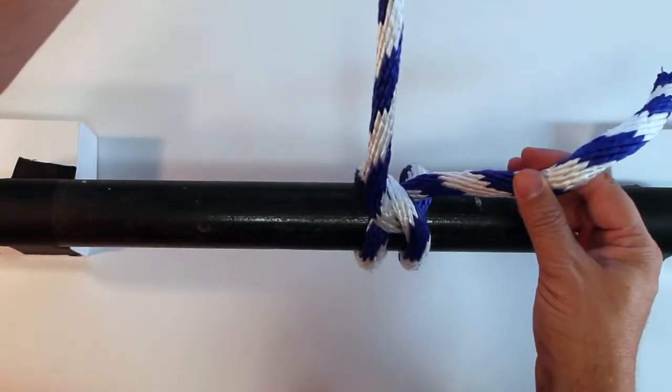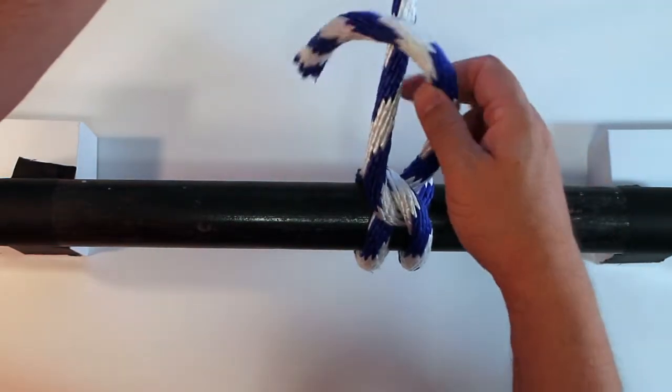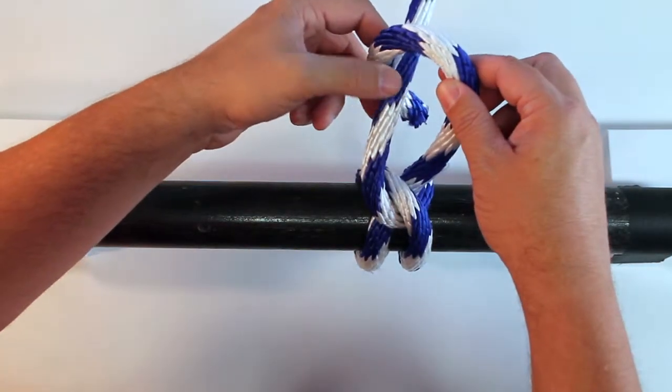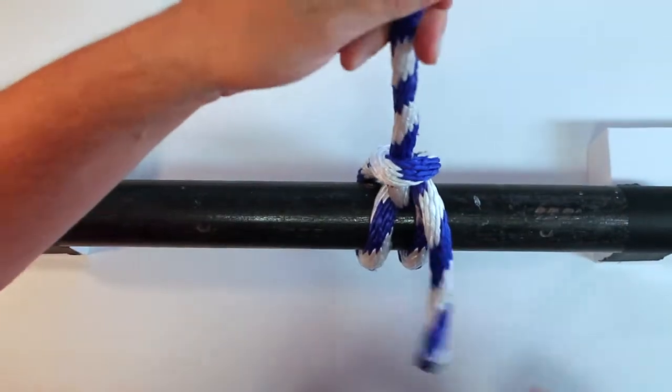To do this, take your tail end of the rope, go around the rope one time, pull it back through itself, and pull tight. Now you've got a half hitch in there.